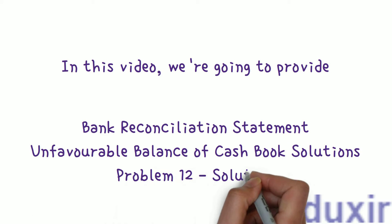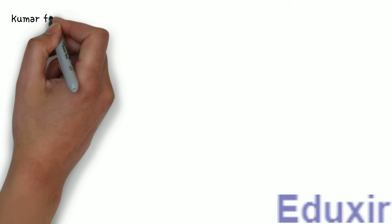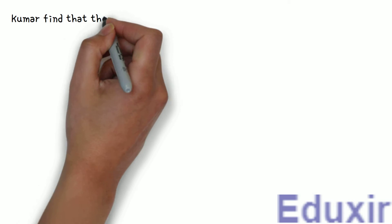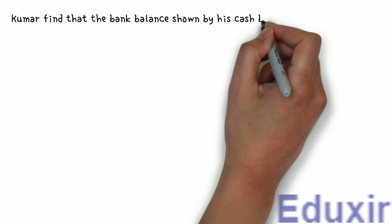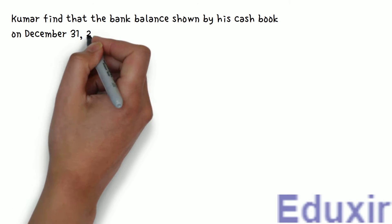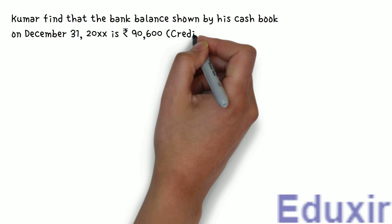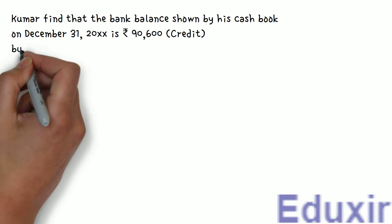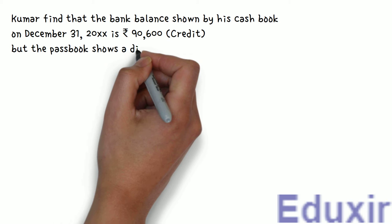Problem 12 solution. The problem statement is as follows. Kumar finds that the bank balance shown by the cashbook on December 31, 2000 is Rs. 90,600 credit balance. But the passbook shows a difference due to the following reasons.